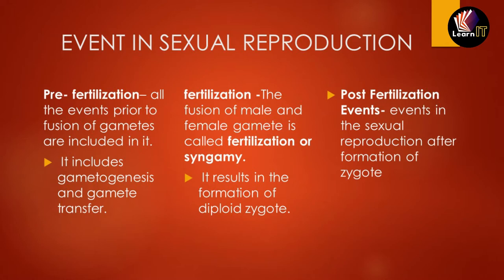All the events which are before fertilization — that is, all events prior to the fusion of gametes — are included in pre-fertilization. It has two sub-topics: the first is gametogenesis and the second is gamete transfer. These are the things that happen in pre-fertilization.